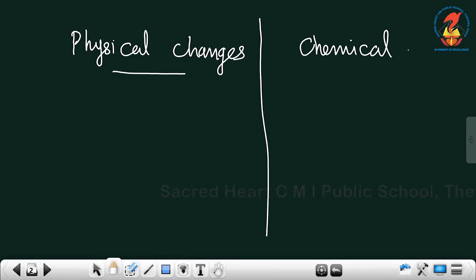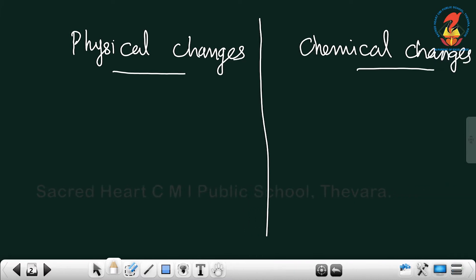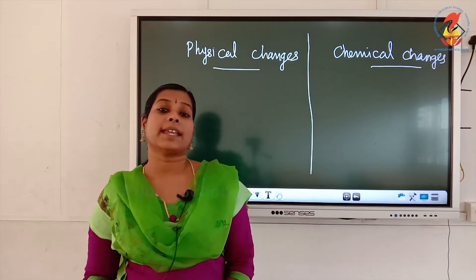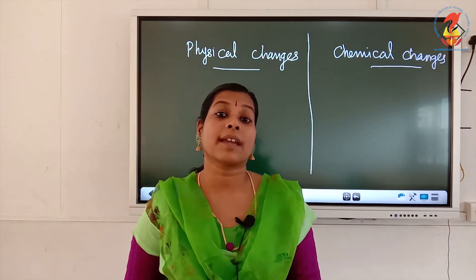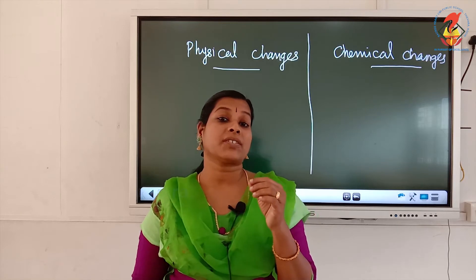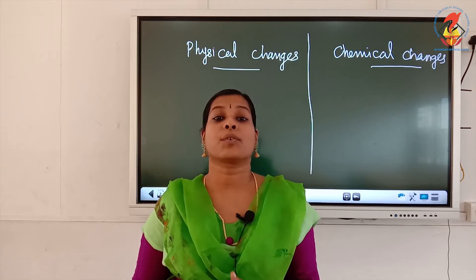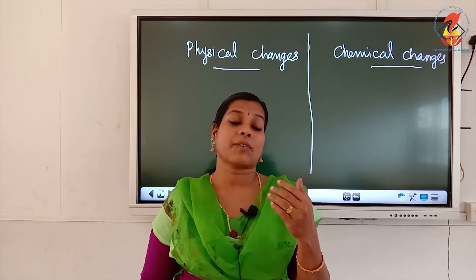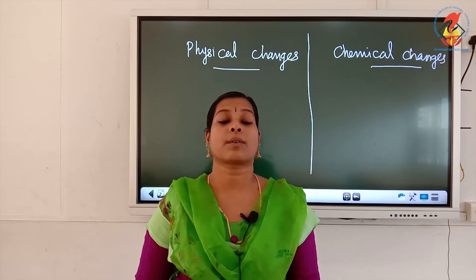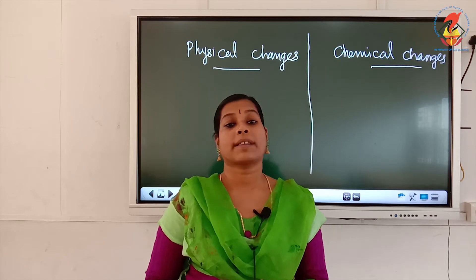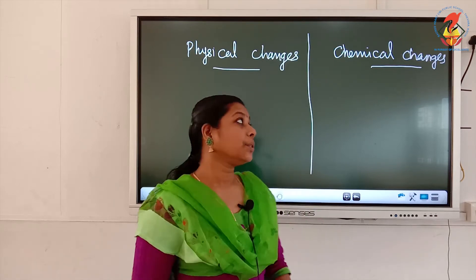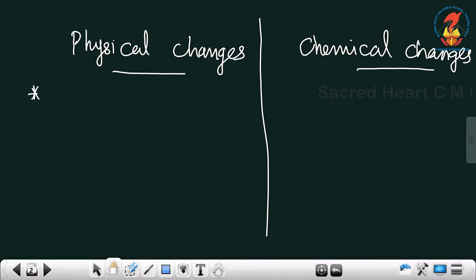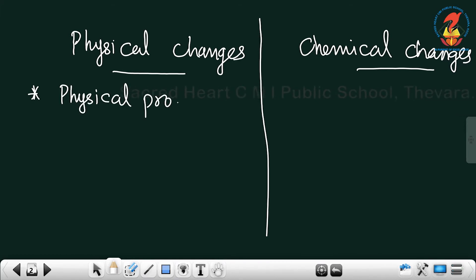We can see the points one by one. First point: physical changes. What is the first point? Physical changes are changes happening to physical properties. If changes for a material are happening to its physical properties only, then we will call that a physical change. During a physical change, only physical properties will change.